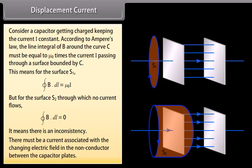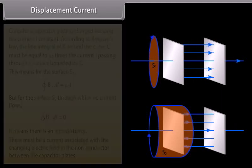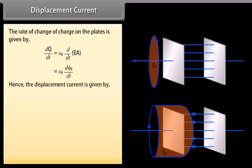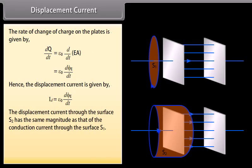There must be a current associated with the changing electric field in the non-conductor between the capacitor plates. The rate of change of charge on the plates is given by epsilon not D upon DT of EA, which is equal to epsilon not D phi E by DT. Hence the displacement current is given by I_D is equal to epsilon not D phi E by DT. The displacement current through the surface S2 has the same magnitude as that of the conduction current through the surface S1.